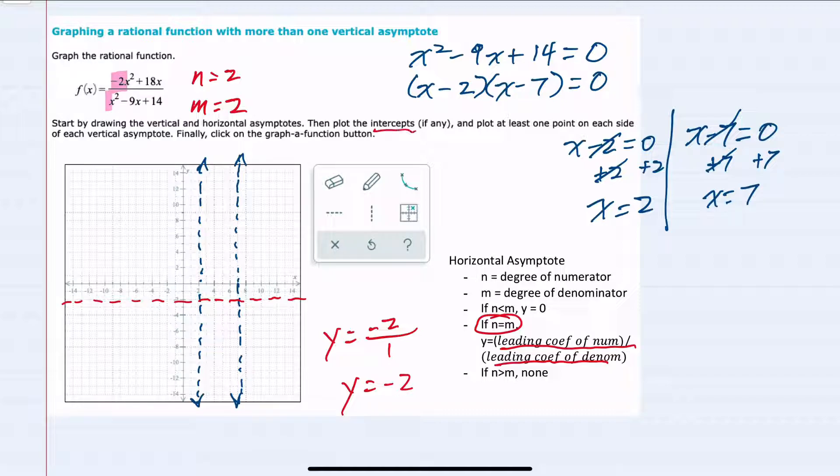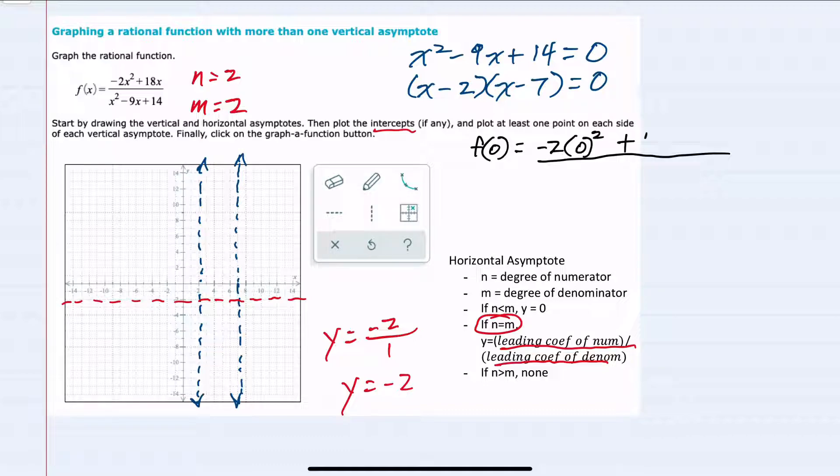Next, we were asked to find intercepts if there are any, and I'll start by looking for the y intercept, which is where x equals zero. If we substitute in zero for all of our x values in the numerator, we have negative 2 times x squared, so zero squared, plus 18 times zero. In the denominator, zero squared minus 9 times zero, plus 14. My numerator simplifies to zero, my denominator simplifies to 14. I found both the x and y intercept because we have the point zero, zero.